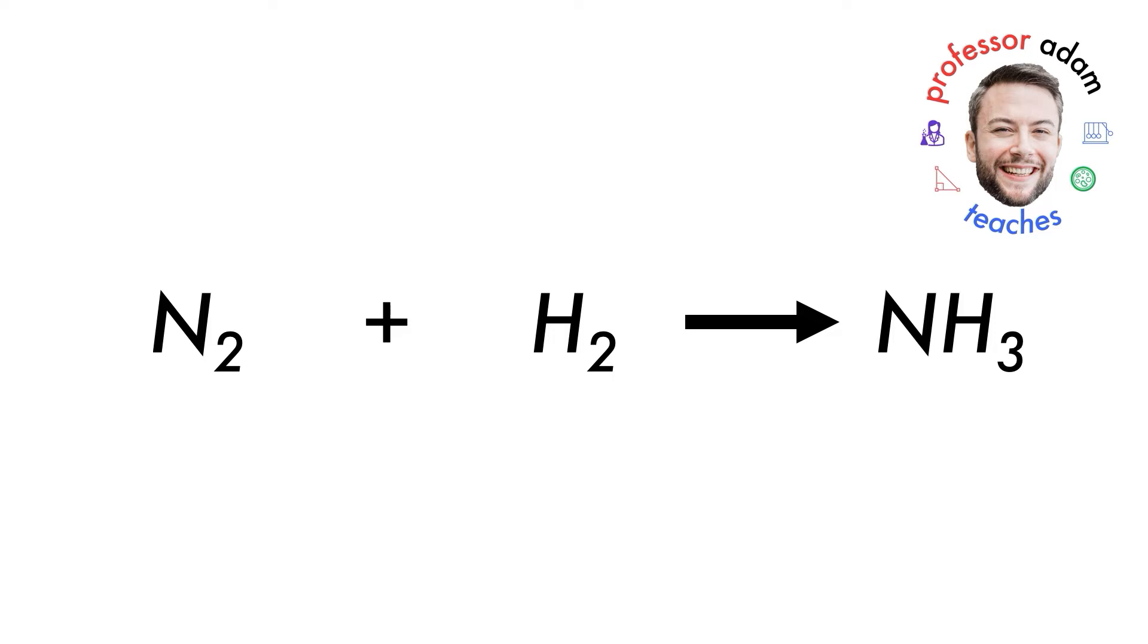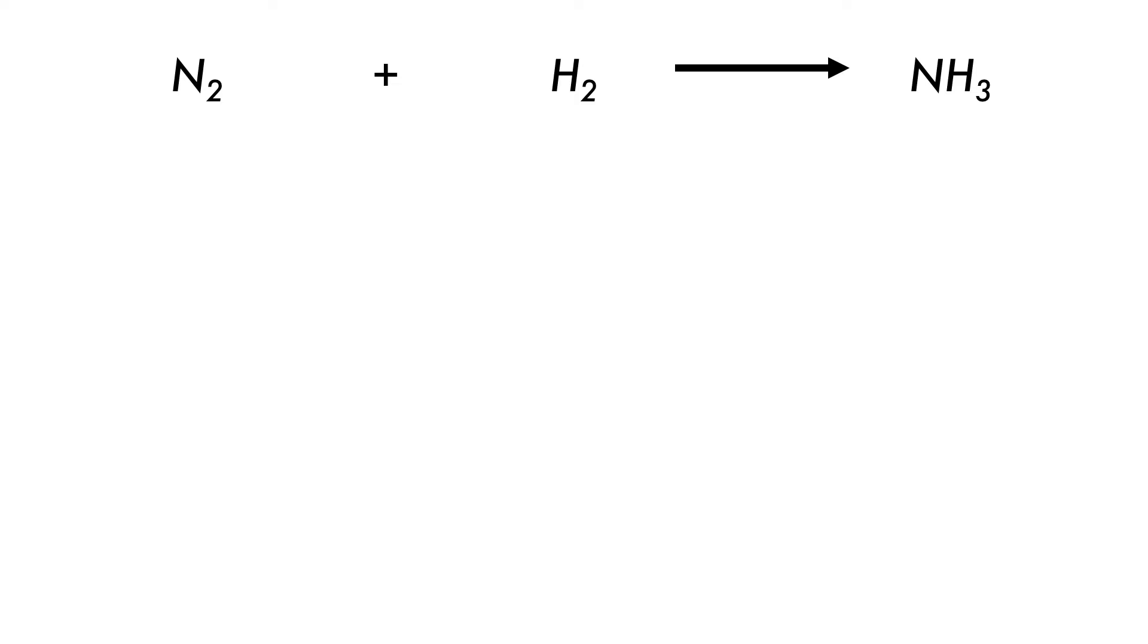Let's try to balance the reaction of nitrogen with hydrogen to produce ammonia. How would we balance the reaction between nitrogen and hydrogen to form ammonia, which is an important reaction called the Haber-Bosch process.